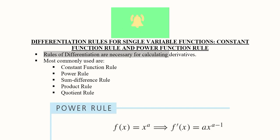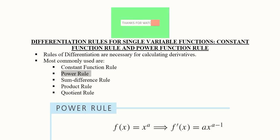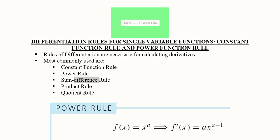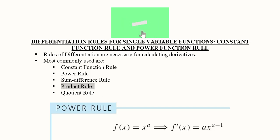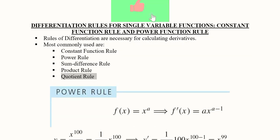There are various rules we can use to differentiate functions and find their derivatives. In addition to the constant function rule and the power rule, we have the sum-difference rule, the product rule, and the quotient rule. The sum and difference rules cover how two functions that are added or subtracted are differentiated. The product rule covers multiplication of two functions, and the quotient rule covers division.